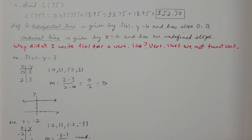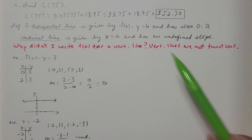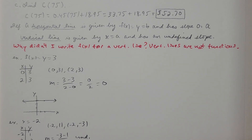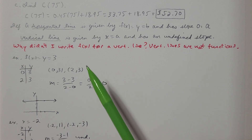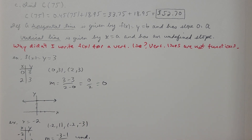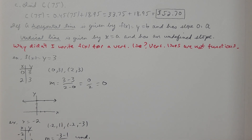Now some information about horizontal and vertical lines. A horizontal line is given by y equals b, or f(x) equals b, and always has a slope of zero. A vertical line is given by x equals a, where a and b are any real numbers, and always has an undefined slope. Vertical lines are not functions — applying the vertical line test, it intersects the vertical line infinitely many times. Any other line that is not vertical is going to be a function.